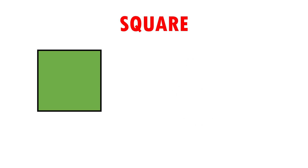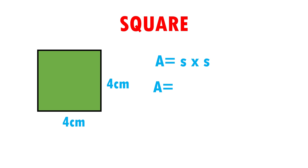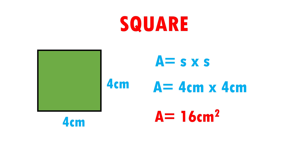Let's see another example. Here I have a square with measurements of 4 times 4. The formula to calculate the area of the square is: area is equal to side times side. When substituting data, area is equal to 4 cm times 4 cm. In the end, area is equal to 16 cm squared. This means that our square can fit 16 squares of 1 cm per side.